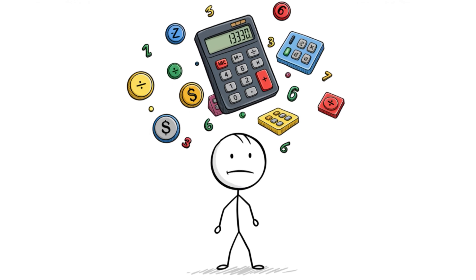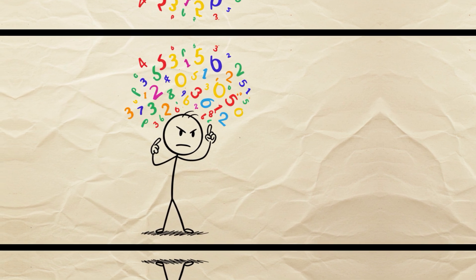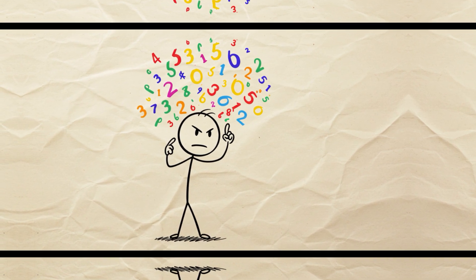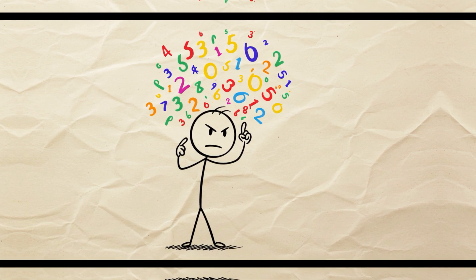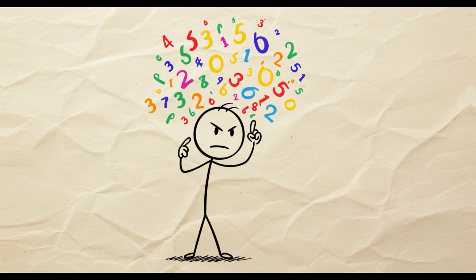The secret lies in something called segmented visualization. Listen, don't worry, it's not complicated. When you look at a number like 87 times 96, your brain tries to solve everything at once, and that's where it freezes.